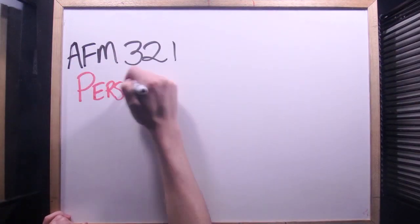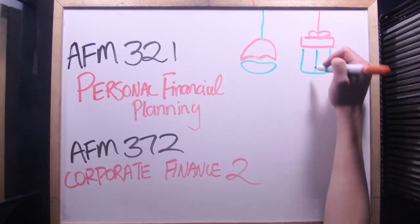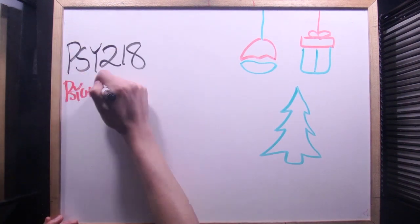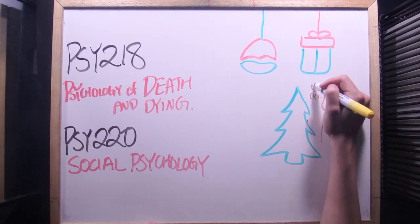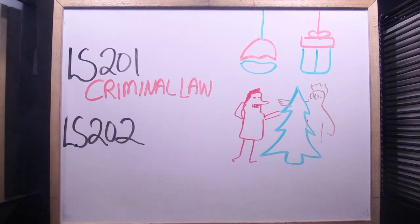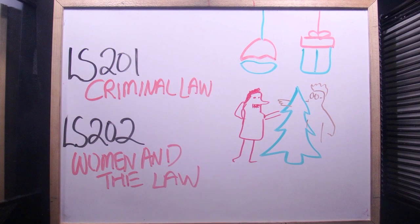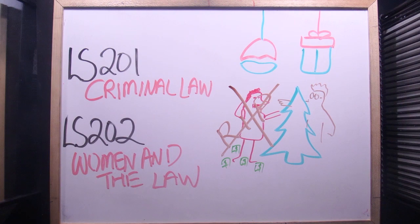Accounting classes are useful once a year, so let's call them Christmas decorations. Psych classes are useful but annoying, so let's think of them as your visiting relatives. Law classes are useful once a lifetime to only some people, so let's think of them as your future inheritance.